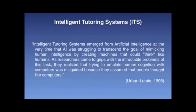In a quote from Urban Lorraine (1996), moving on to intelligent tutoring systems — the next type within the learning object landscape — ITS emerged from artificial intelligence at the very time AI was struggling to transcend the goal of mimicking human intelligence by creating machines that could think like humans. As researchers grappled with the intractable problems of this task, they realized that trying to emulate human cognition with computers was misguided because it assumed that people thought like computers. The resulting crisis provoked a reassessment of AI's goals, allowing progress in areas such as expert systems.